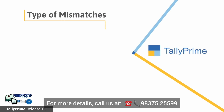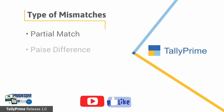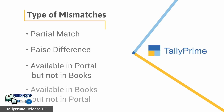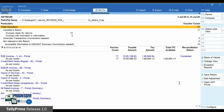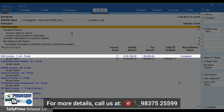Mismatches could be due to a partial match, where some information of the invoices from books matches with that uploaded by a supplier on the GST portal; pairs difference, where information is available in the portal but not in the books, or available in books but not in the portal. To check which transactions are causing the mismatch, press Enter on a specific section and drill down. We will drill down into B2B invoices.